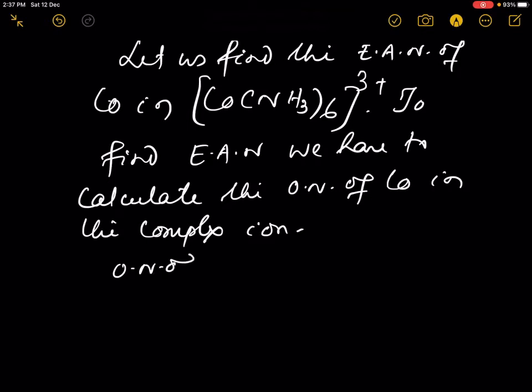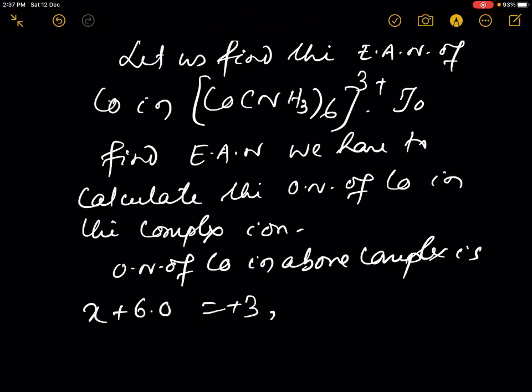The oxidation number of cobalt in the complex ion is x plus 6 times 0 equals plus 3. x is found to be plus 3.